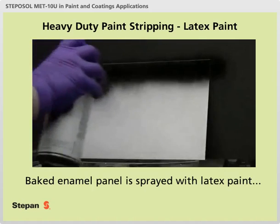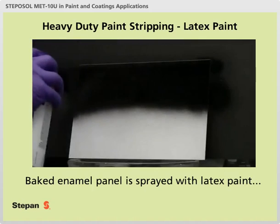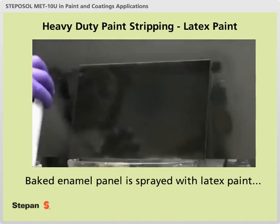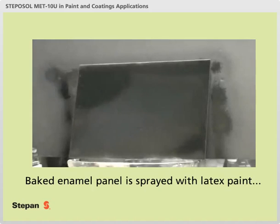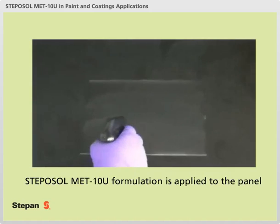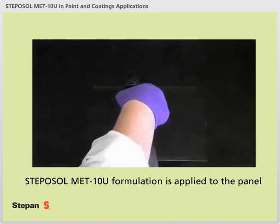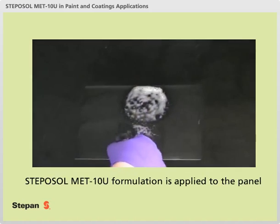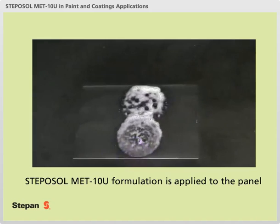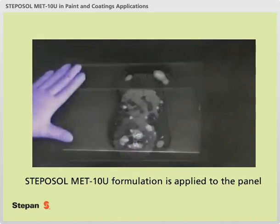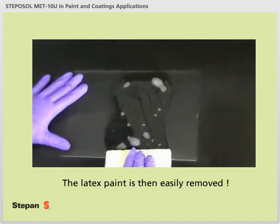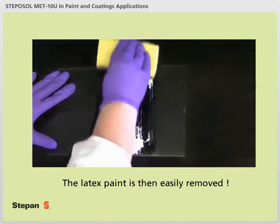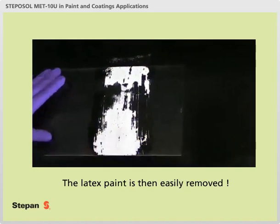Lastly, we will look at heavy-duty paint stripping applications using latex paint on a baked enamel surface. A baked enamel panel is sprayed with latex paint and allowed to dry overnight. Next, the Steposol Med10U formulation is applied to the panel. Once again, 15 minutes after the solution is applied, the paint binder to the surface is broken and the Steposol Med10U formulation begins to remove the latex paint.